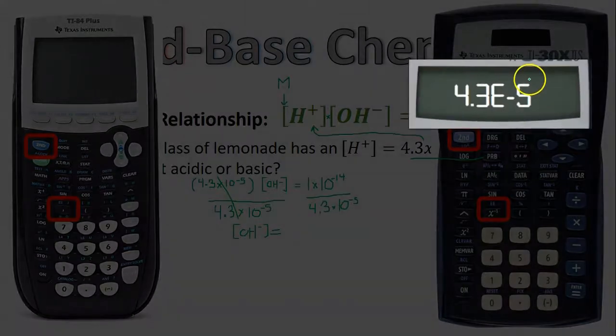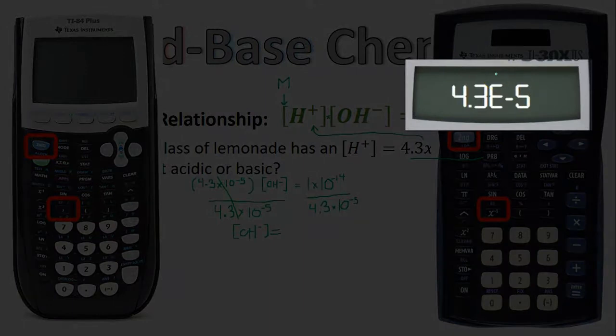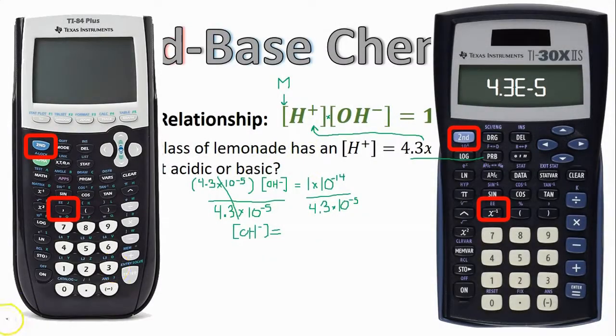On the calculator, it should look like this. That's the same thing as saying 4.3×10^-5. So it's a good idea to try this on whatever calculator it is that you're going to be using, and just make sure you get the correct final answer of 2.3×10^-10. Remember, these square brackets mean that the units will be in molarity as a concentration.